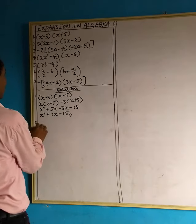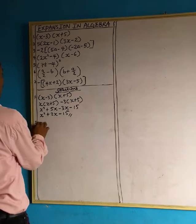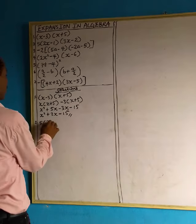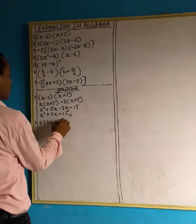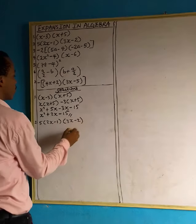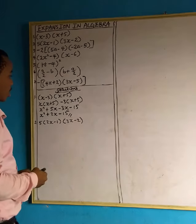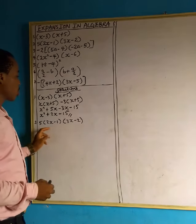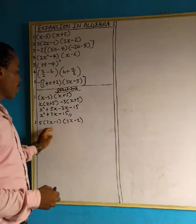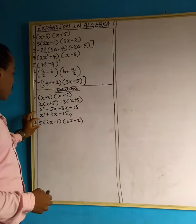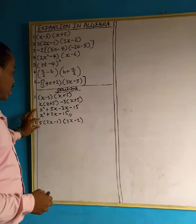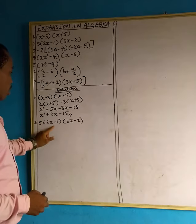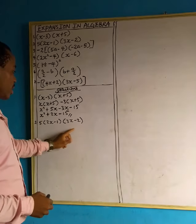The second one: 5 times open bracket 2x minus 1, close bracket, open bracket 3x minus 2. We are going to expand — let's focus on the brackets. We expand them first, then our final answer will be multiplied by 5. That's how to solve this. So let's concentrate on the bracket part and expand.